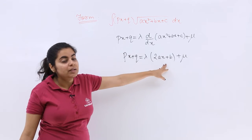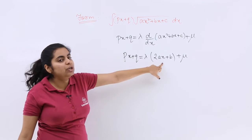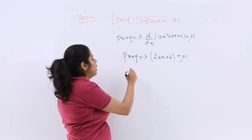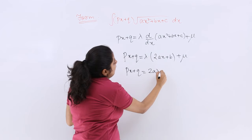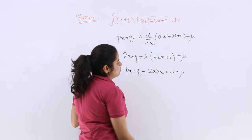Now what you will do is open up the brackets and compare. So again, one more step: Px plus Q is equal to 2a lambda x plus b lambda plus mu.